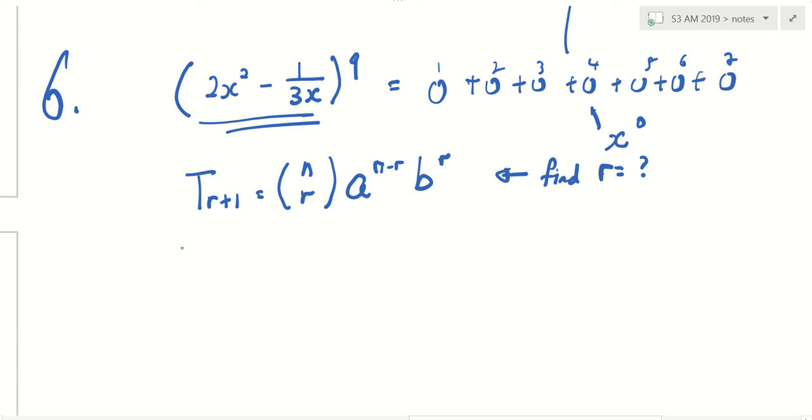Okay, let's see how to use. Term r plus 1, I copy. Put in all the numbers that you know. What is n? 9, choose r, r I don't know. Because you want to find r, man. What is a? 2x squared, 9 minus r. What is b? Then this is r.